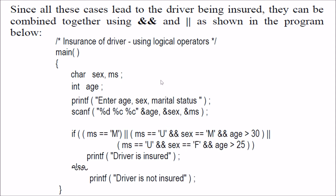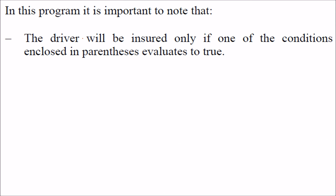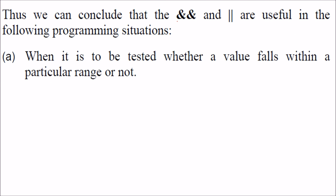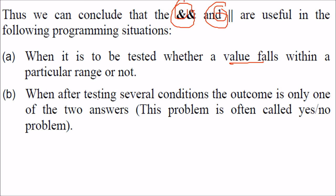That is how we use the AND and OR operators. What we have to see here is that the parentheses used in AND and OR do a similar trick — on the left-hand side and right-hand side of AND, if any is false it gives false; in OR, if any of the left or right-hand side is true it gives true. So what we conclude here is: when testing whether a value falls within a particular range or not, and when after testing several conditions the outcome is only one of two answers — true or false, yes or no — we use AND and OR.